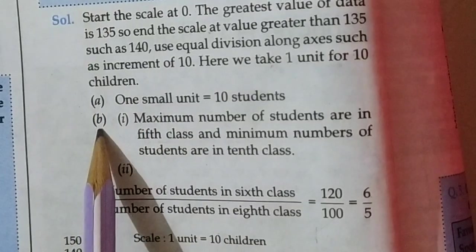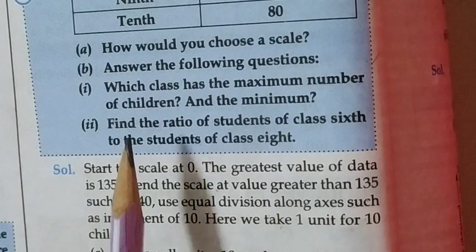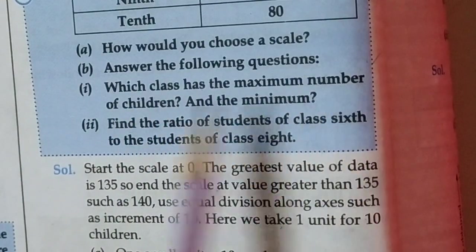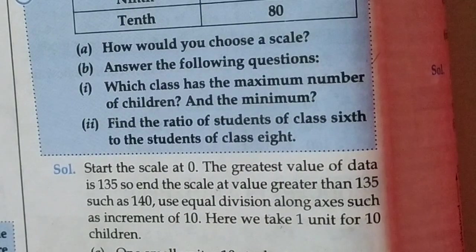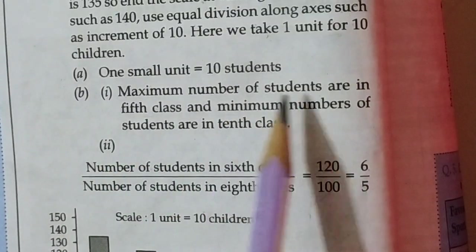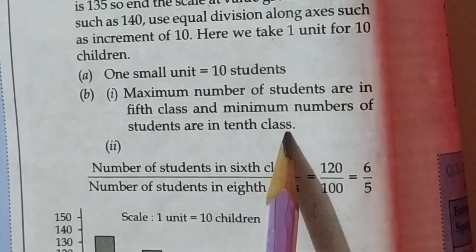Now B, first question. B's question is: which class has the maximum number of children and the minimum? So the answer is, maximum number of students are in 5th class and minimum number of students are in 10th class.